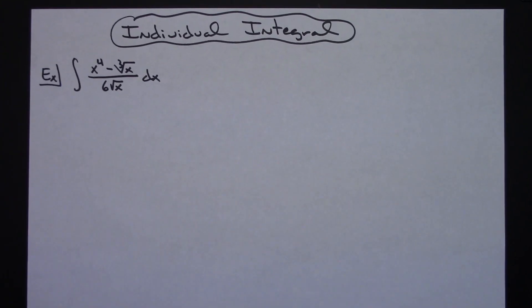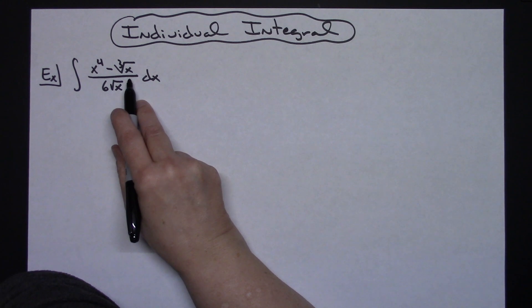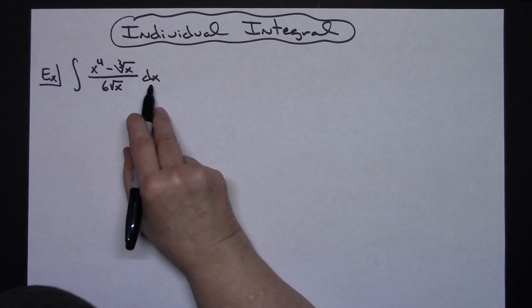In this video I'm going to work out an individual integral. It's going to be a very straightforward integral that you would have learned right after you learned integration. No u-substitution, nothing fancy—it's going to be straight algebraic manipulation of this rational function. I'm integrating x to the fourth minus the cube root of x all over six square root of x dx.